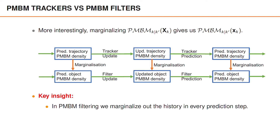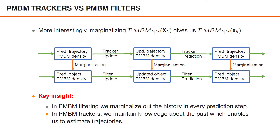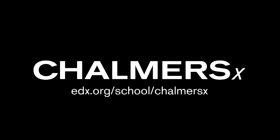This further clarifies the close connection between PMBM trackers and PMBM filters. One way to think about the relation is that PMBM filters have access to trajectory information but marginalize out the history in every prediction step. In PMBM trackers, we extend the trajectories during the prediction step instead of marginalizing out the past, and this enables us to estimate trajectories and compute the posterior distribution over the set of trajectories.